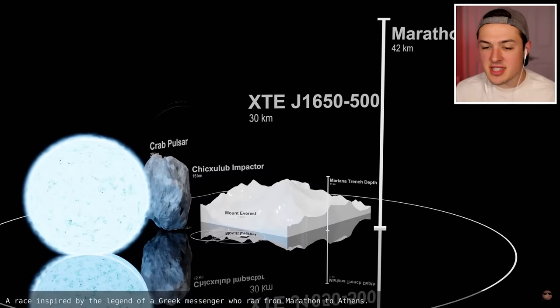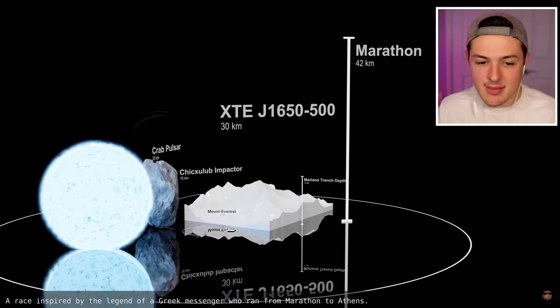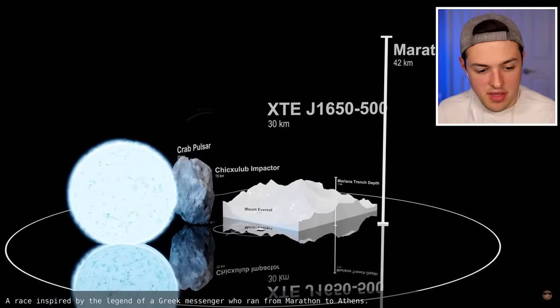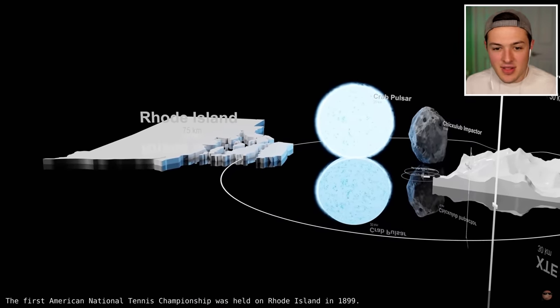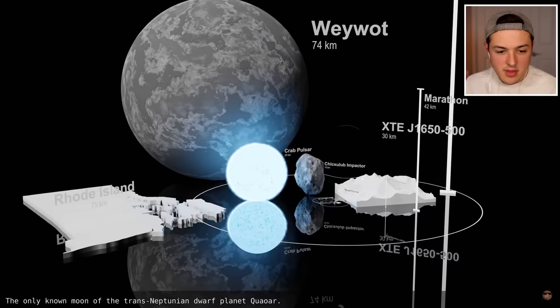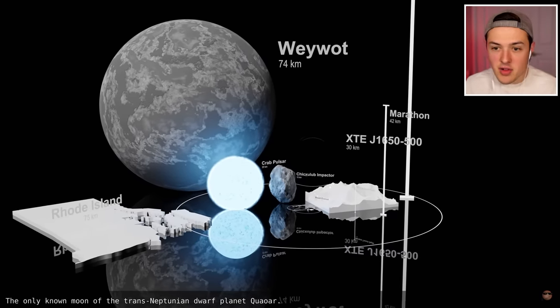And then you have something called the Crab Pulsar. It is a relatively young star. And then there's a black hole XTE. Who names these? I feel like AI named everything in space. Marathon. A race. Oh, oh. That's how far a race is. Wait a second. That's insane, dude. Rhode Island. 75 kilometers.